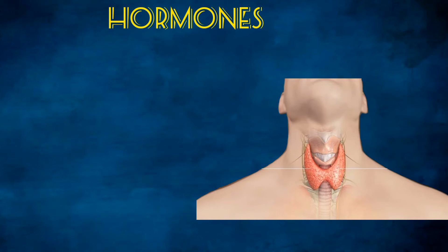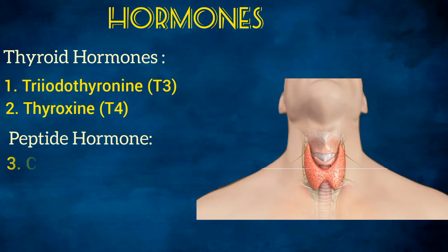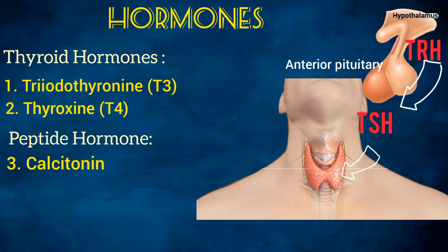The thyroid gland secretes three hormones: triiodothyronine (T3) and thyroxine (T4), which are collectively known as thyroid hormones, and the peptide hormone calcitonin. Thyroid hormone secretion is under the control of thyroid stimulating hormone from the anterior pituitary.